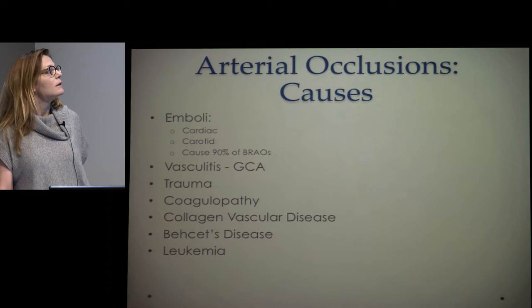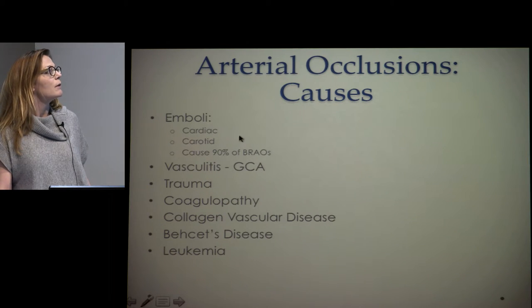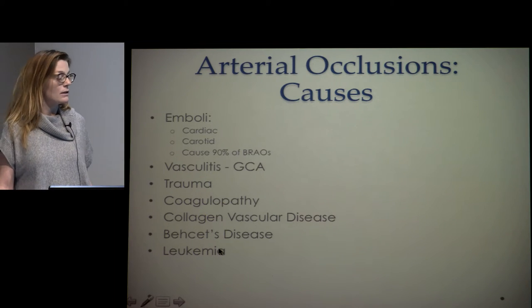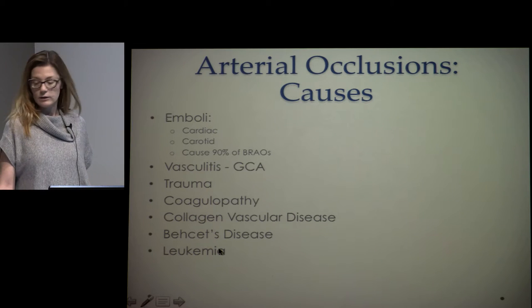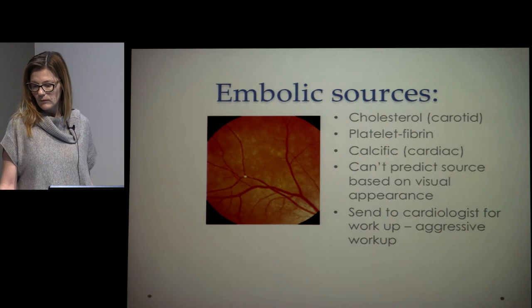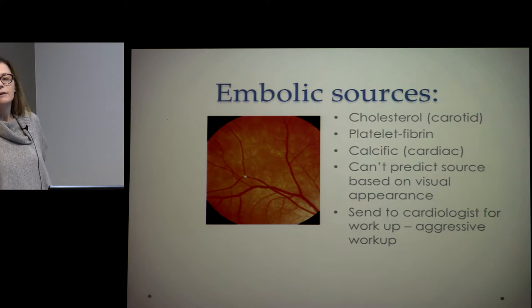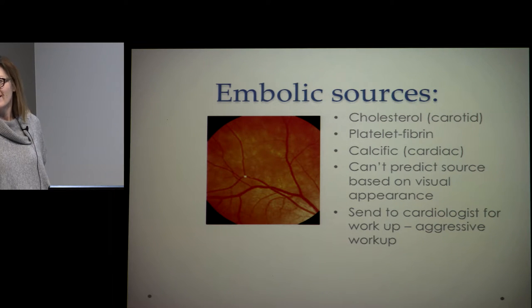The most common cause of arterial occlusion, especially branch retinal artery occlusion, is emboli from a cardiac or carotid source. Other things to consider include vasculitis, coagulopathies, trauma, collagen vascular disease, and more rarely Behçet's or leukemia. As far as distinguishing whether an embolus is coming from the carotid versus the heart, you really can't just look at an embolus and determine its source — studies have looked at that and it's not very accurate.